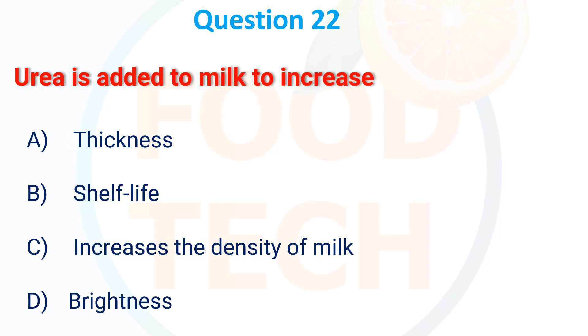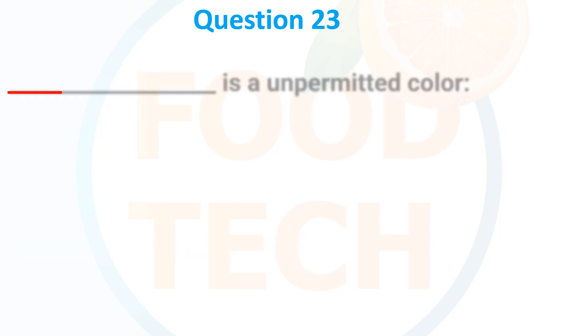Urea is added in milk to increase: A. Thickness, B. Shelf life, C. Density of milk, D. Brightness. The correct answer is to increase the density of milk.